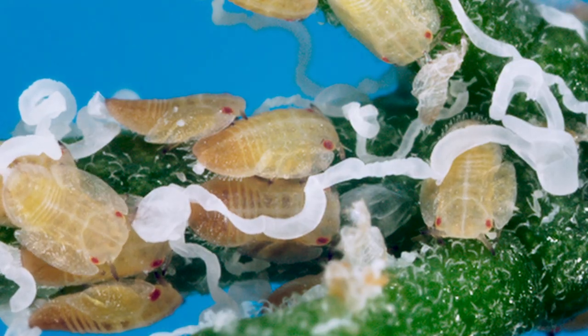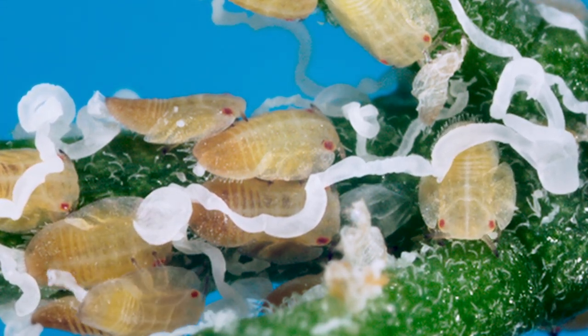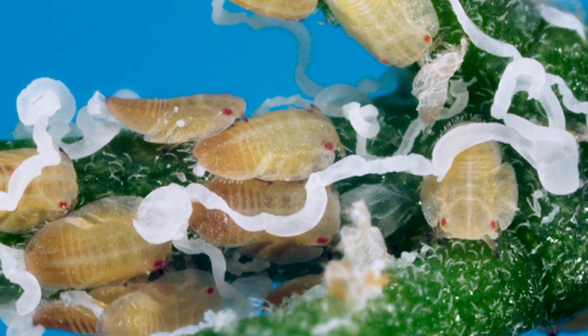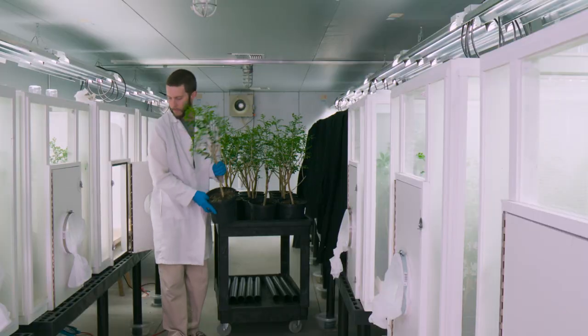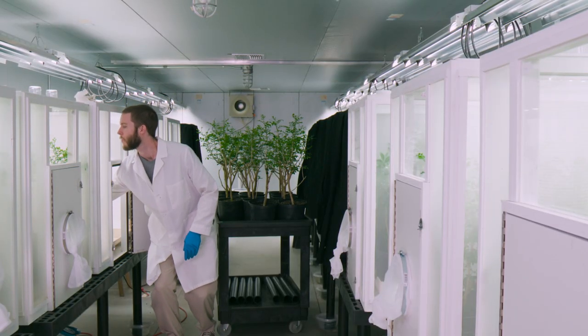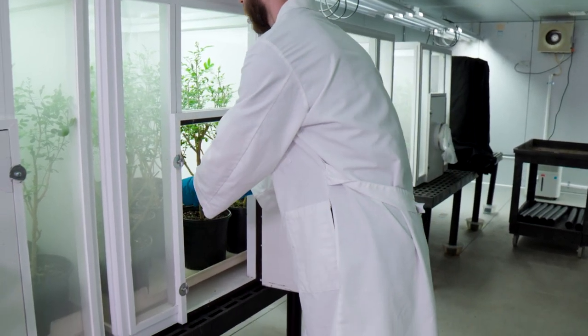Once the psyllid nymphs have reached their fourth instar, the plants are loaded onto caged carts to prevent psyllids from escaping, and moved to one of several tamarixia rearing chambers. Plants are placed into a cage, and depending on the psyllid infestation level, 300 to 600 adult tamarixia are released into the cage.